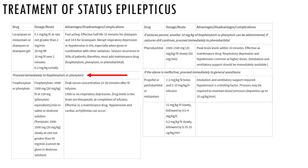This flow chart shows that we give the benzodiazepine quickly because they act quickly, while monitoring for respiratory depression and hypotension. If that doesn't work, we give fosphenytoin or phenytoin. If that doesn't work, we go to phenobarbital, and if that doesn't work, we go to general anesthesia.